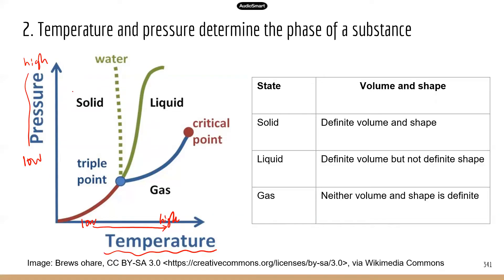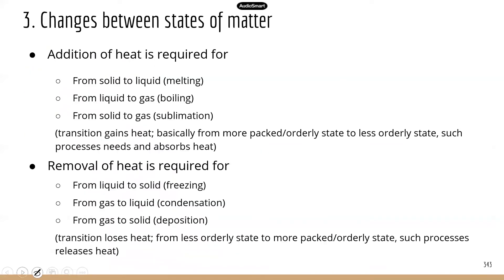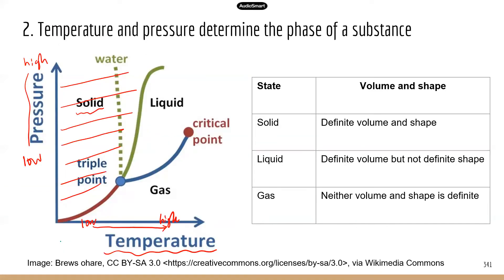For example, in this area the substance will be in solid. You can find a particular point — say the temperature is at this point and the pressure is at this particular value — and when you put those two together, you can see that at this particular temperature and pressure, the substance will be in the solid state. Now, what happens if you use the same pressure but increase the temperature? At the new temperature and pressure, the substance will be in liquid. So keeping pressure constant but increasing temperature changes the substance from solid to liquid.